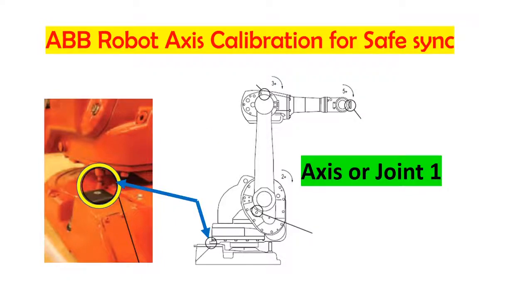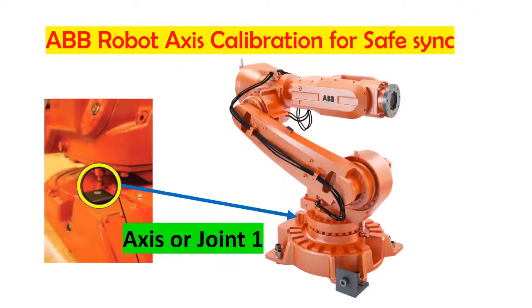Today our topic is how to calibrate a robot axis. You need to calibrate the robot's teach pendant or axes if your robot batteries were drained or if you have a lot of alarms on the revolution counter.